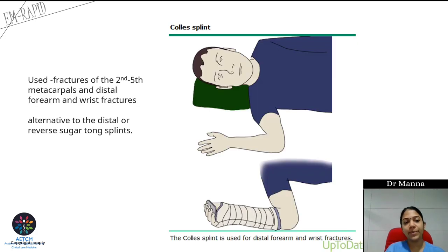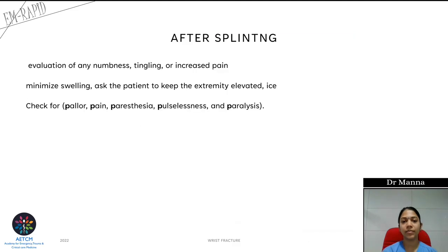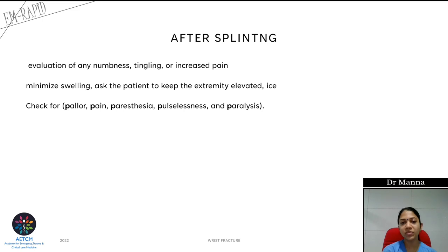The coaptation splint is used for fractures of the second to fifth metacarpals and is an alternative to the reverse sugar tong splint for wrist or distal forearm fractures. After splinting, continuously evaluate the patient for numbness, tingling, or increased pain, and check for the five Ps: pallor, pain, paresthesia, pulselessness, and paralysis. Elevate the limb and apply ice to reduce swelling.